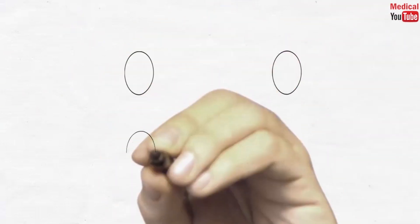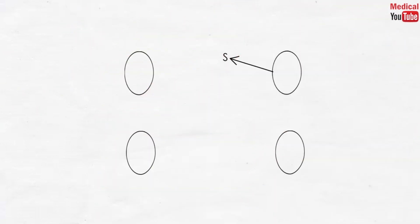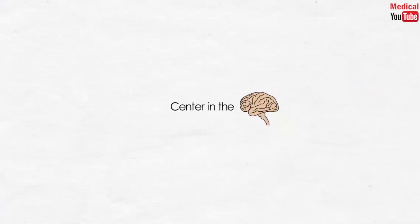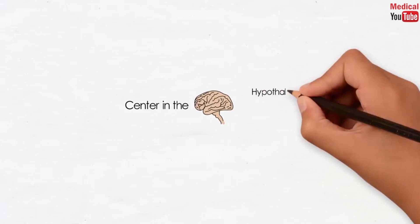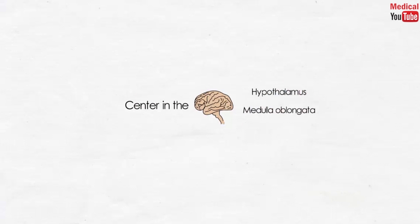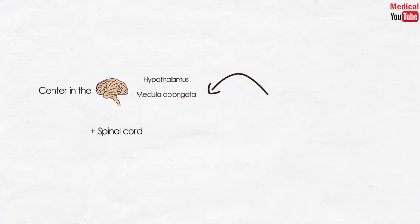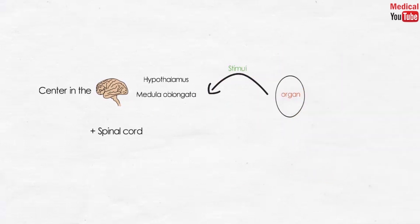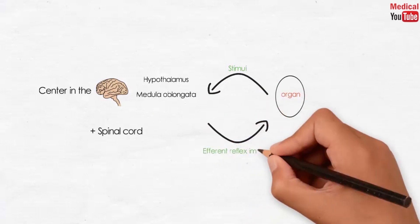There are some organs receiving only sympathetic innervation, such as the adrenal medulla, kidney, pilomotor muscles, and sweat glands. Centers in the brain — such as the hypothalamus, medulla oblongata, and also the spinal cord — respond to the stimuli of the afferent impulse originating in the viscera and other autonomically innervated structures, by sending out efferent reflex impulses via the ANS.